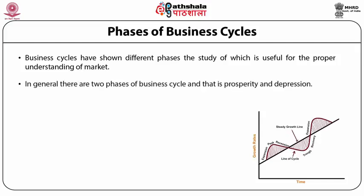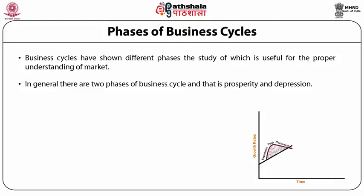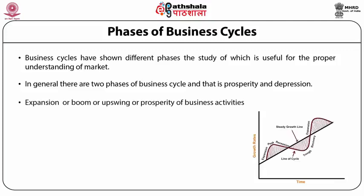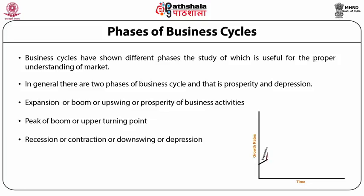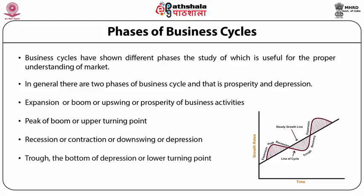There are some stages in between the two main phases. These are: expansion or boom or upswing, peak of boom or upper turning point, recession or contraction or downswing or depression, and trough — the lower turning point of depression.